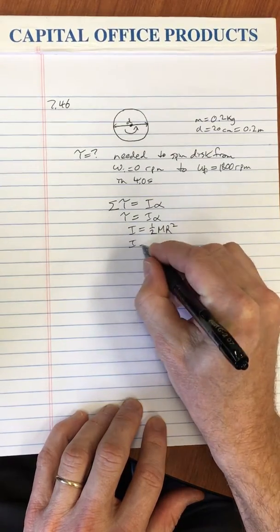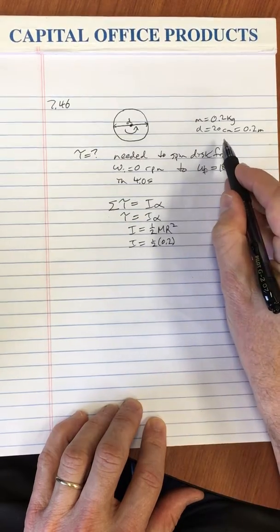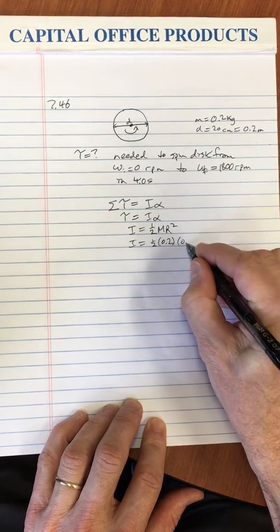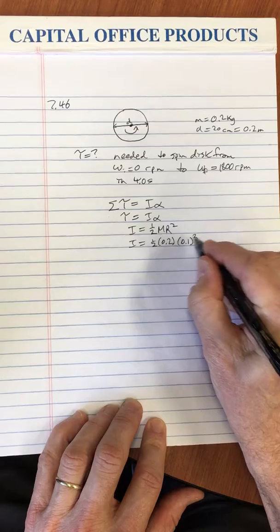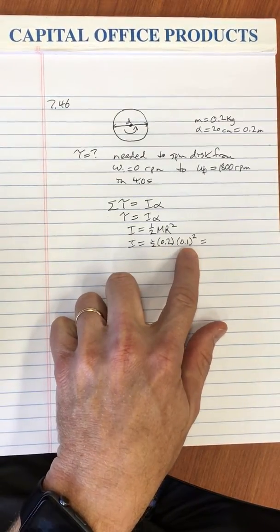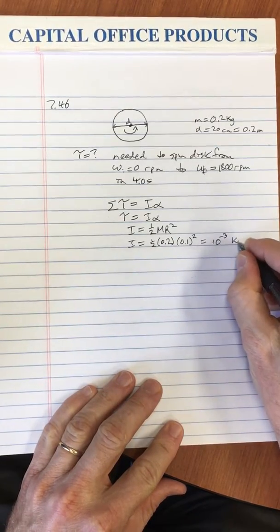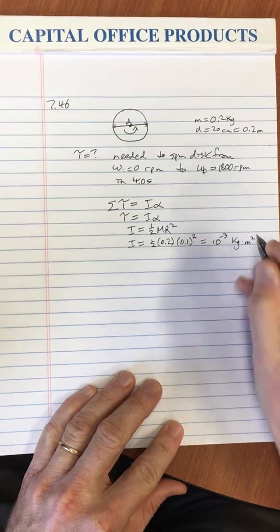So this I equals one-half times 0.2, and the radius is half the diameter, so it's 0.1 meters squared, and that gives me 0.1 times 0.1 times 0.1, or 10 to the minus 3 kilogram meter squared.